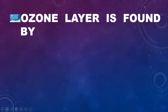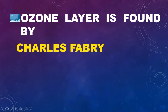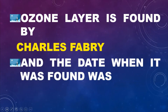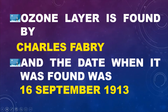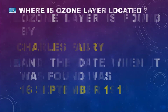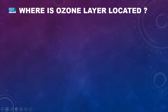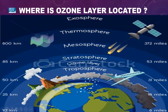The ozone layer was found by Charles Fabry, and the date when it was found was 16th September 1913. Where is the ozone layer located? Here you are able to see the picture of our atmosphere, and it has many layers.